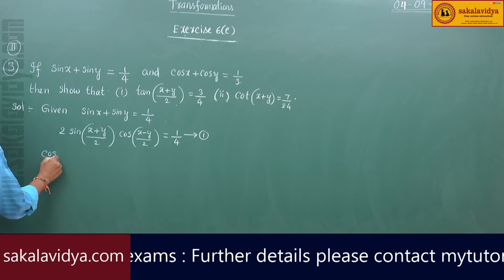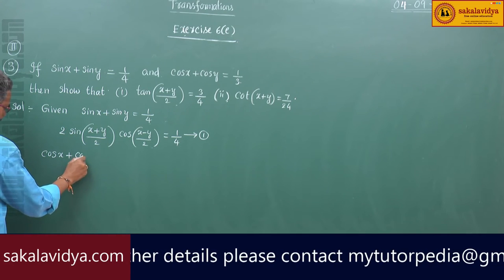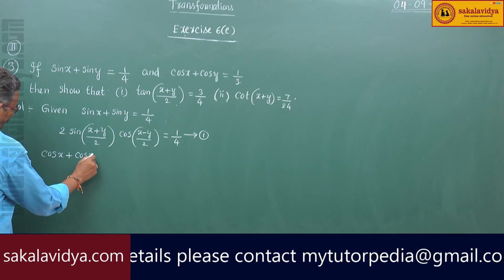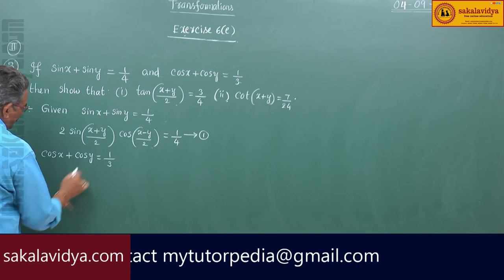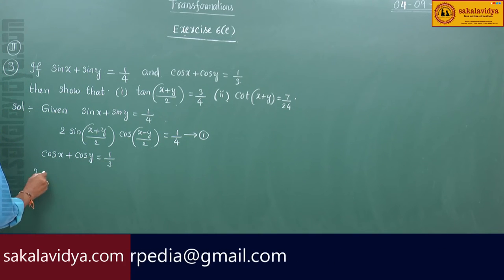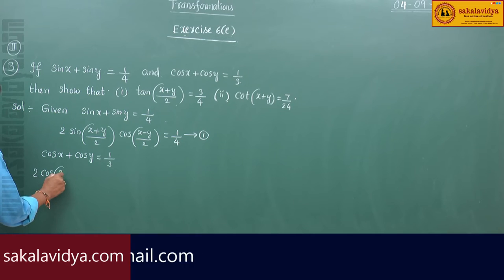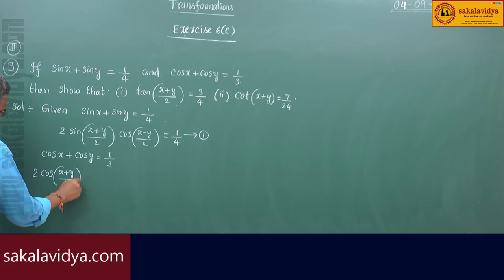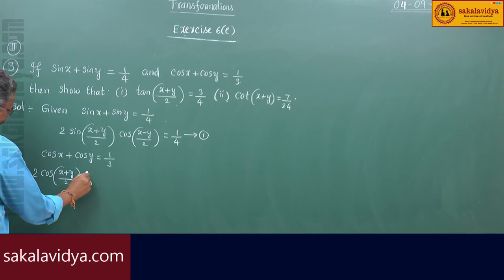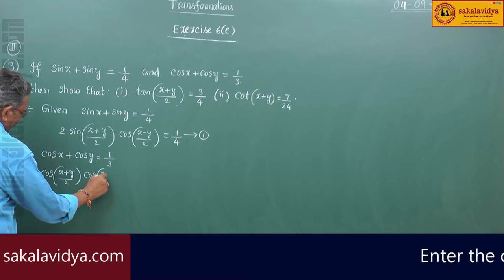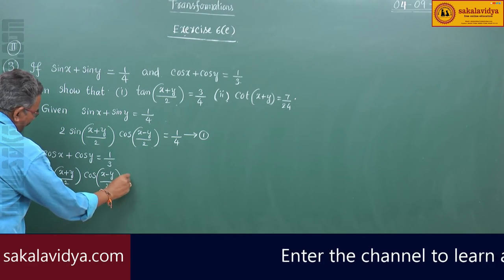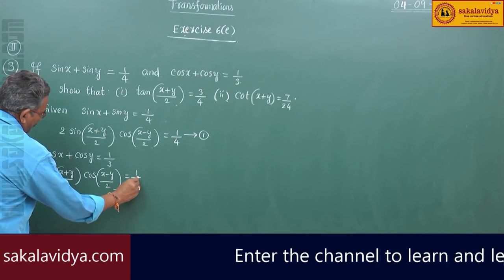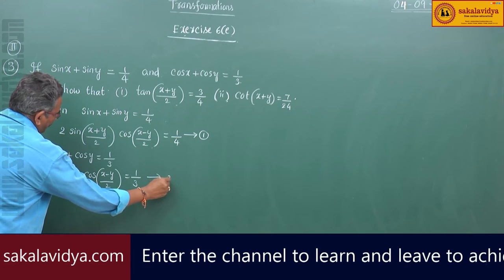Next, cos x plus cos y equals 1 by 3. This is 2 cos((x+y)/2) cos((x-y)/2) equals 1 by 3. Call this equation 2.